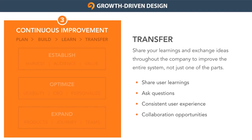The final step in the continuous improvement cycle is the transfer step. The goal of the transfer step is to share your learnings and exchange ideas throughout the entire company in order to improve the entire business, not just one of the parts. Between internal communications and meetings, you'll be able to share those user learnings from the experiments you performed in that previous month. You can make recommendations to other teams based on the things that you've learned and where they could possibly improve.